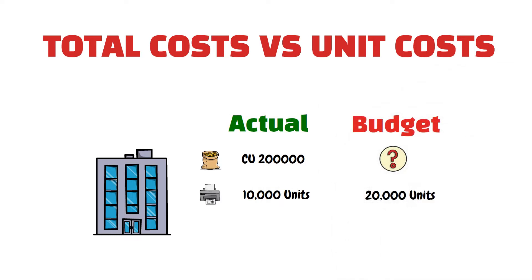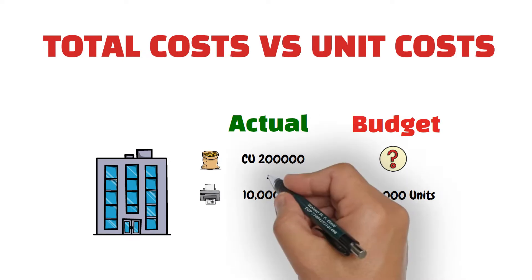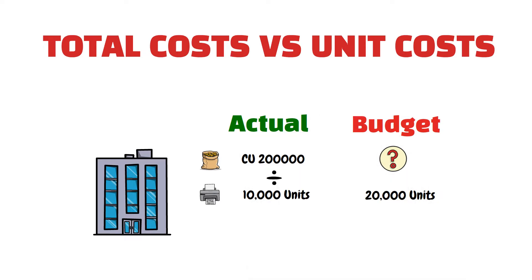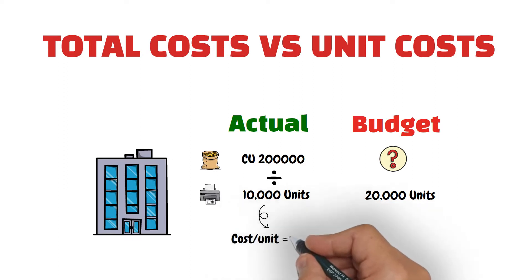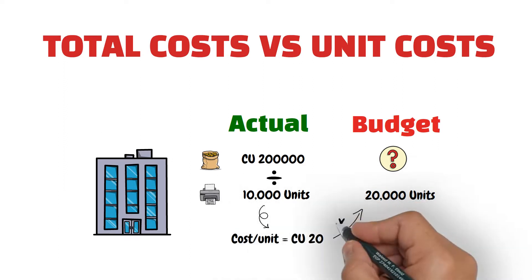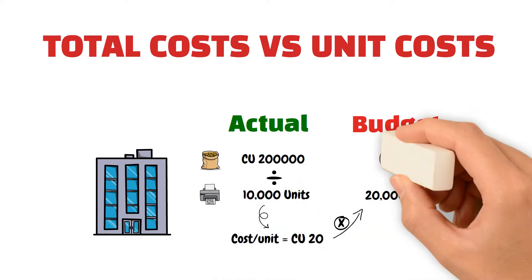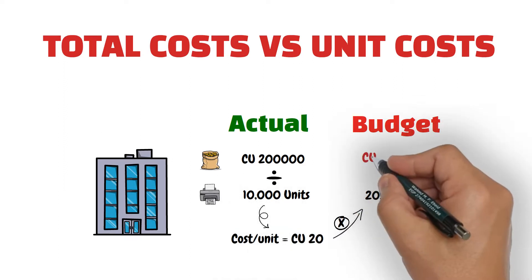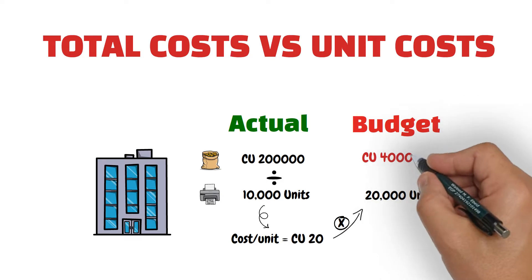Someone might say: let's divide the actual manufacturing cost currency units by the number of printers produced to get the unit cost per printer, then multiply it by the target production level to get the budgeted manufacturing costs.